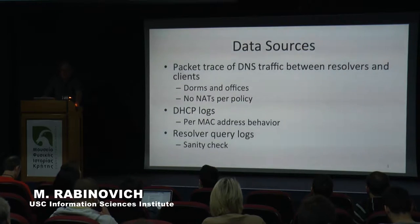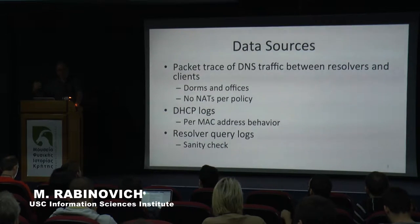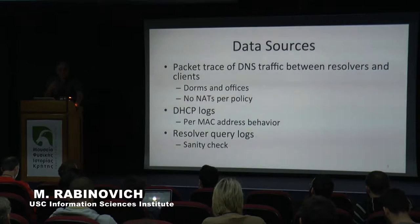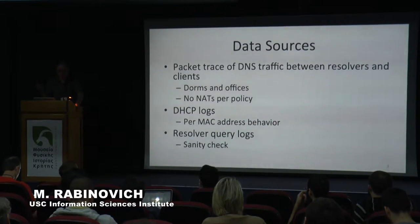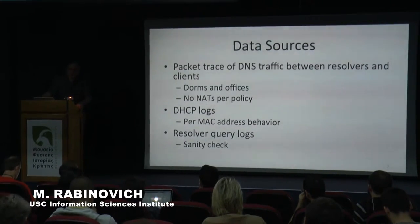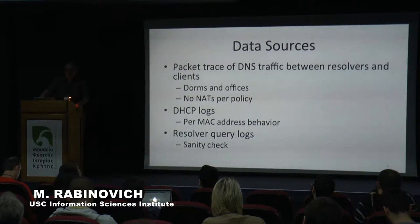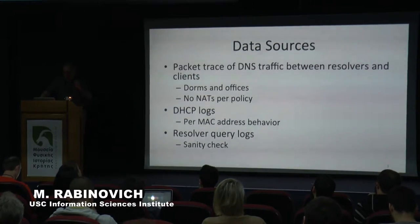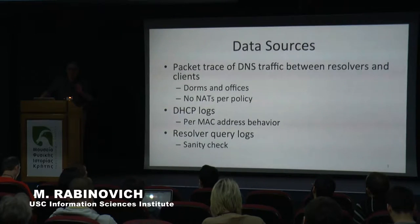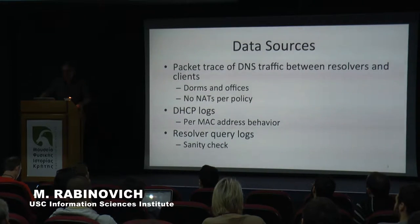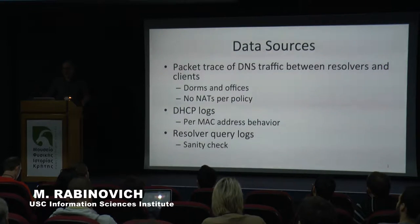There are two main challenges in trying to characterize behavior on a per-device basis. One challenge is that many devices hide behind a common NAT. Another challenge is that individual devices assume different personalities on the internet because they get different IP addresses over time from DHCP servers. We were lucky in being able to untangle these two challenges. At our university, there is a policy that prohibits NAT devices from being used. There are some university-approved NAT devices like wireless gateways, but we knew their IP addresses, so we excluded those from our study.